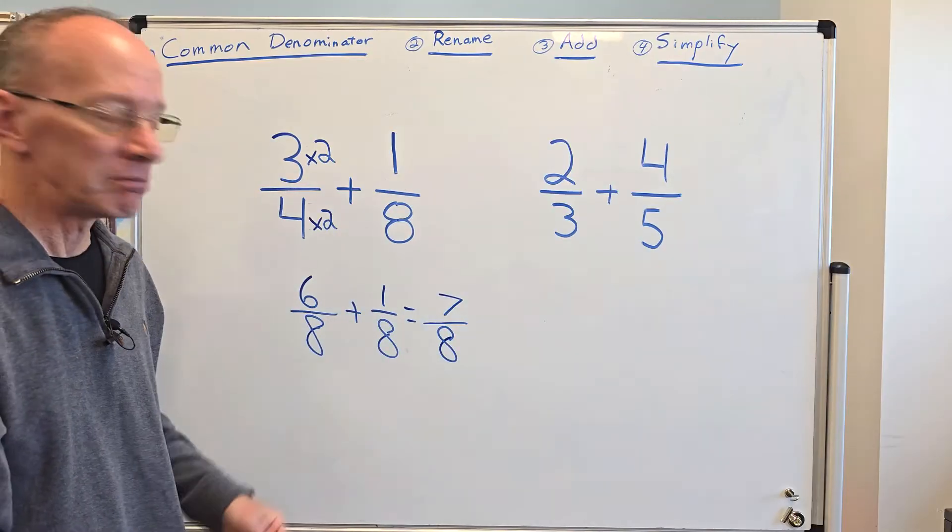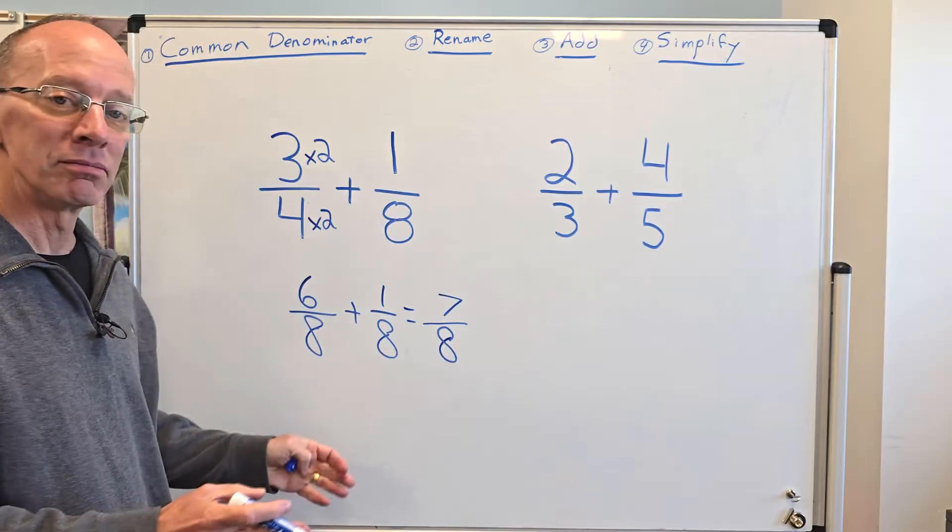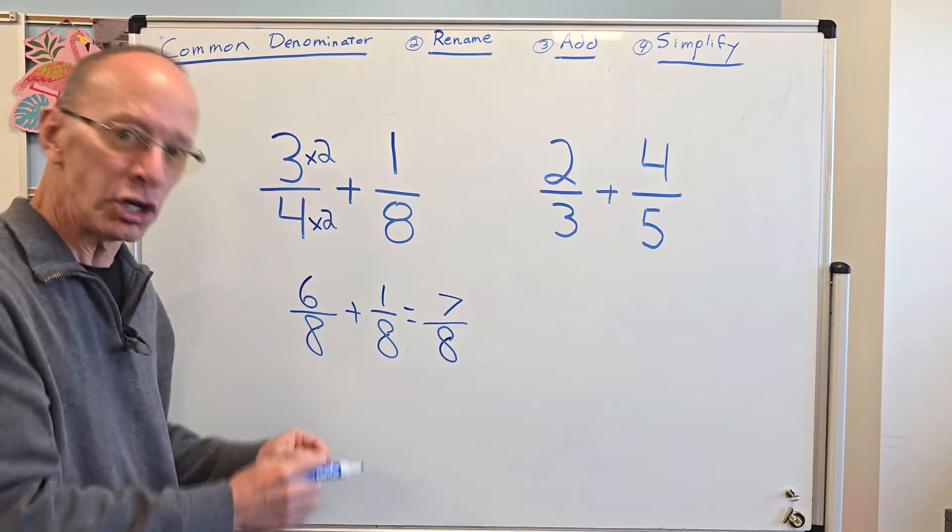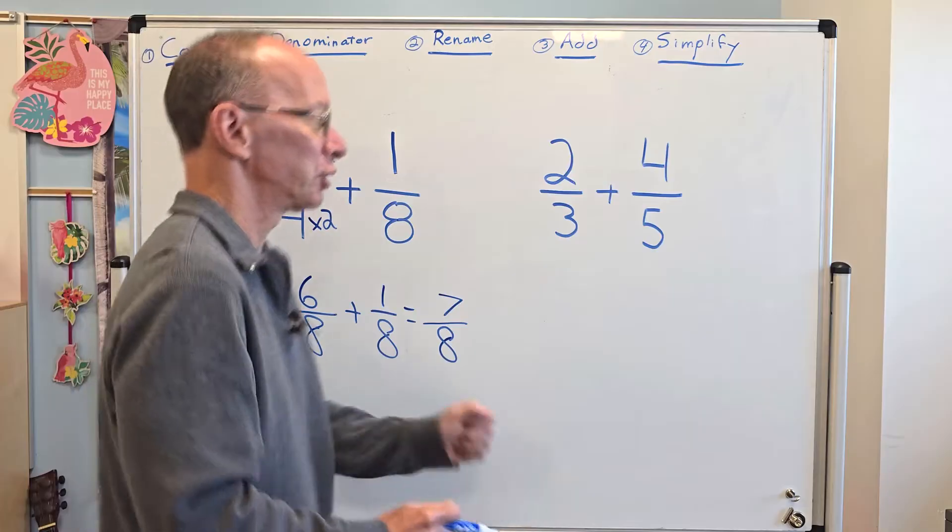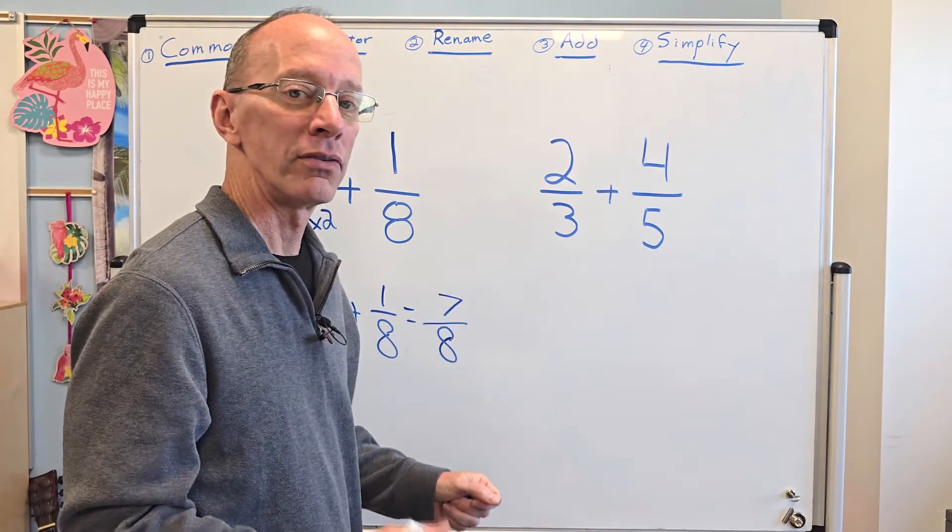Do we need to simplify? No. Seven eighths, that's the lowest we can go. That's our answer. That's it. Ready to move on to another problem? Yeah, let's do it. So we have two thirds plus four fifths.